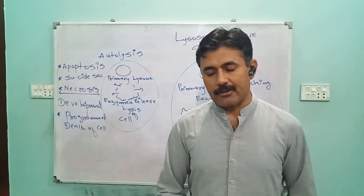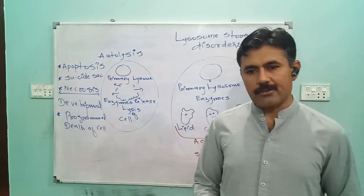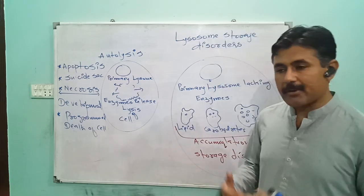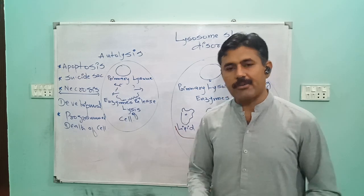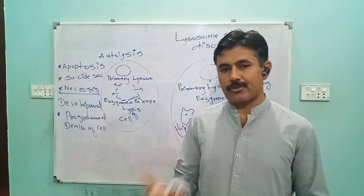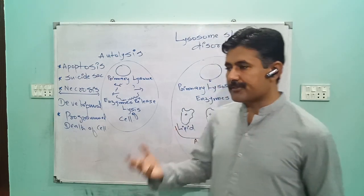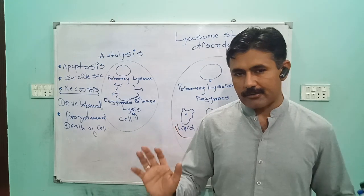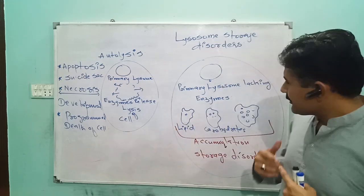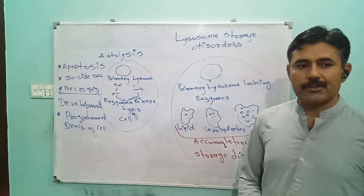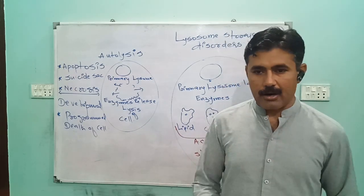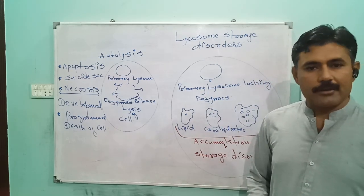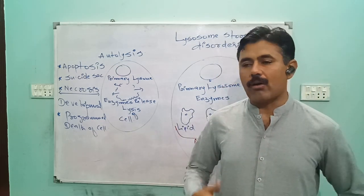Every cell has a set of genes, and these genes code for different kinds of proteins that are modified to form enzymes. Lysosomes get their enzymes from genes — from hereditary material. If an organism is normal and all genes are normal, they code for normal proteins that are stored in the lysosome, enabling it to digest all kinds of food. However, due to certain reasons, when genetic material undergoes mutation or there is another congenital problem, lysosomes may lack certain enzymes.